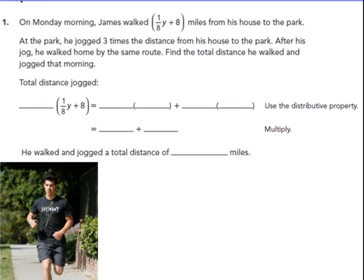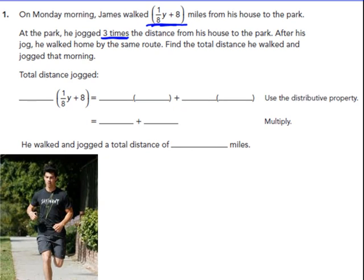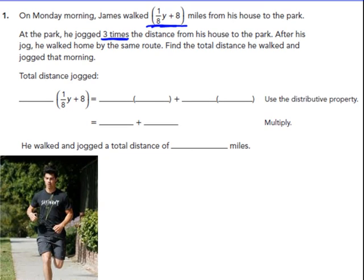Okay, here's another example. On Monday morning, James walked 1/8Y plus 8 miles from his house to the park. At the park, he jogged 3 times the distance from his house to the park. After his jog, he walked home by the same route. So now he's going back home that distance of 1/8Y plus 8 miles. Find the total distance he walked and jogged that morning.